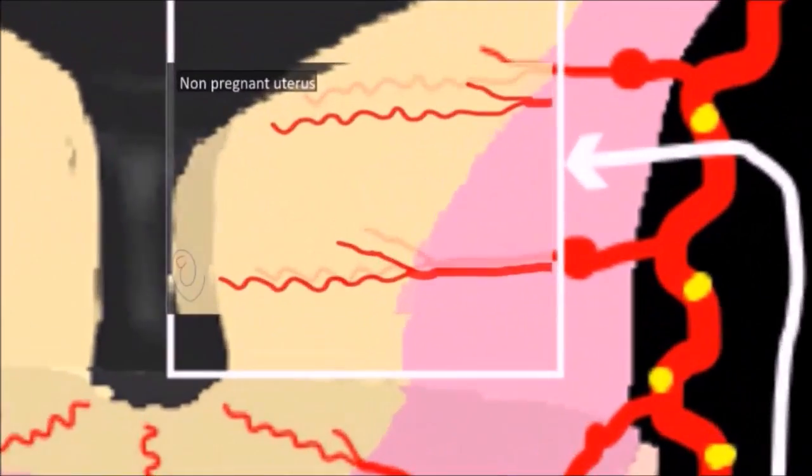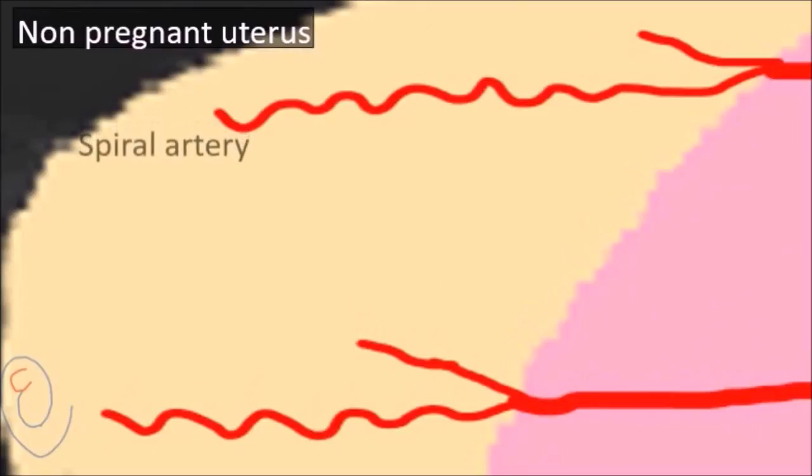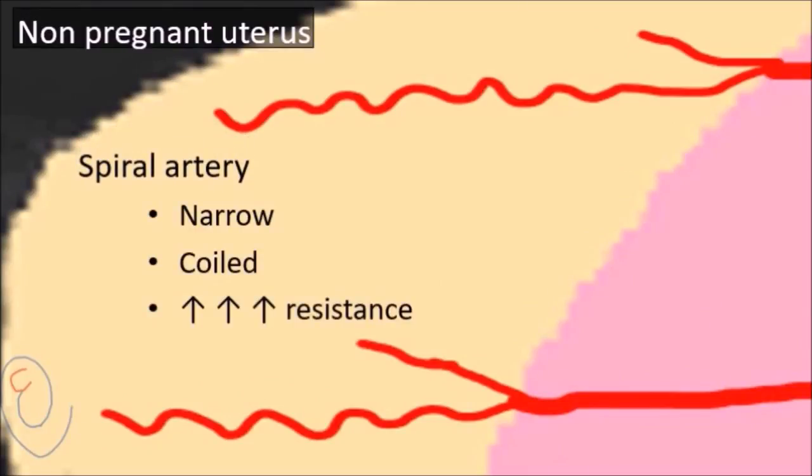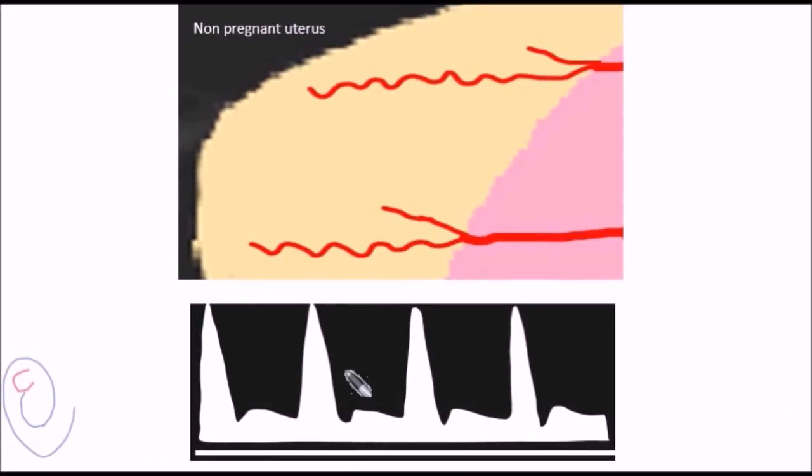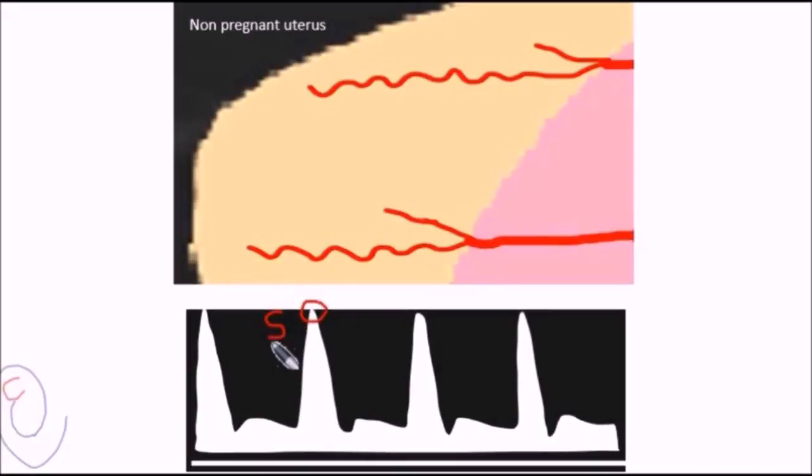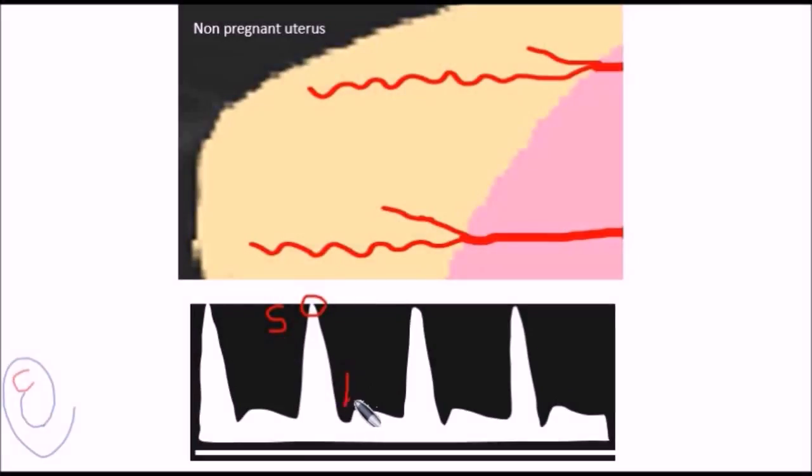The spiral artery is a terminal branch of the uterine artery and is narrow, highly coiled, with very high resistance. This results in a Doppler graph characterized by sharp rise and sharp decline during systole. The flow pattern during diastole is characterized by early diastolic notch and reduced end-diastolic flow.